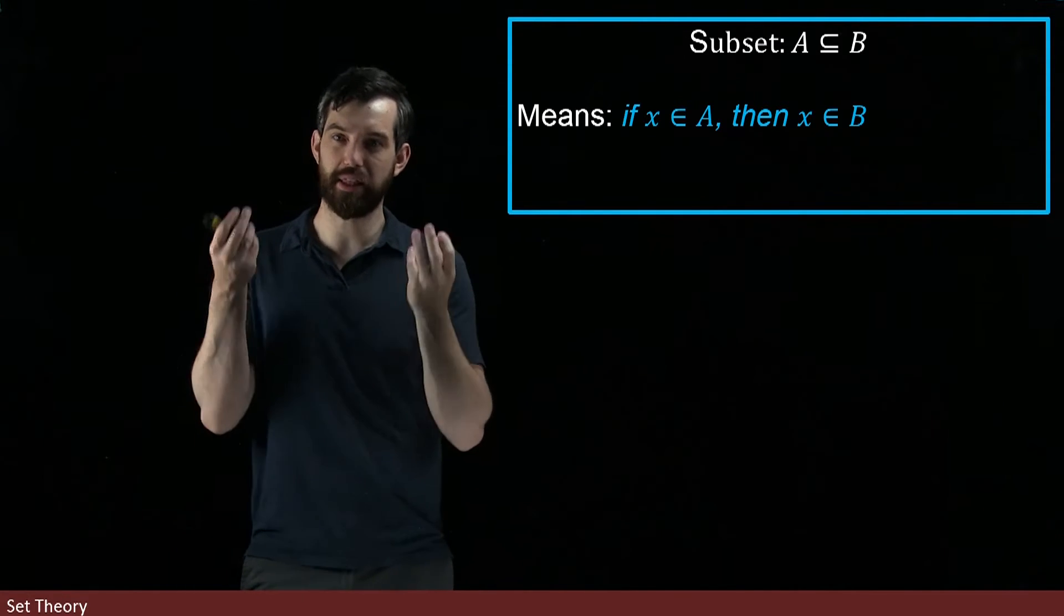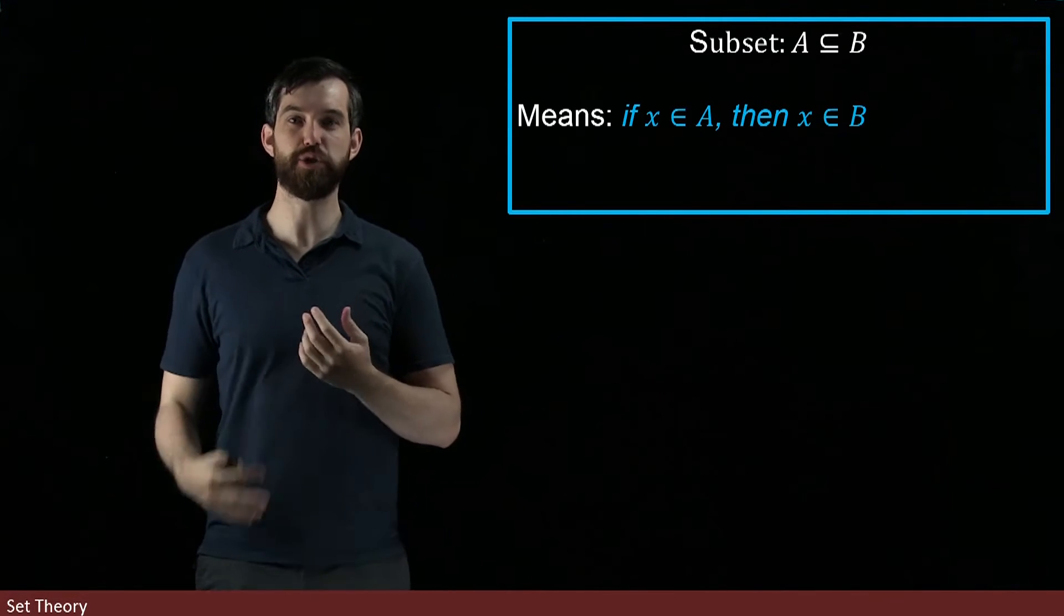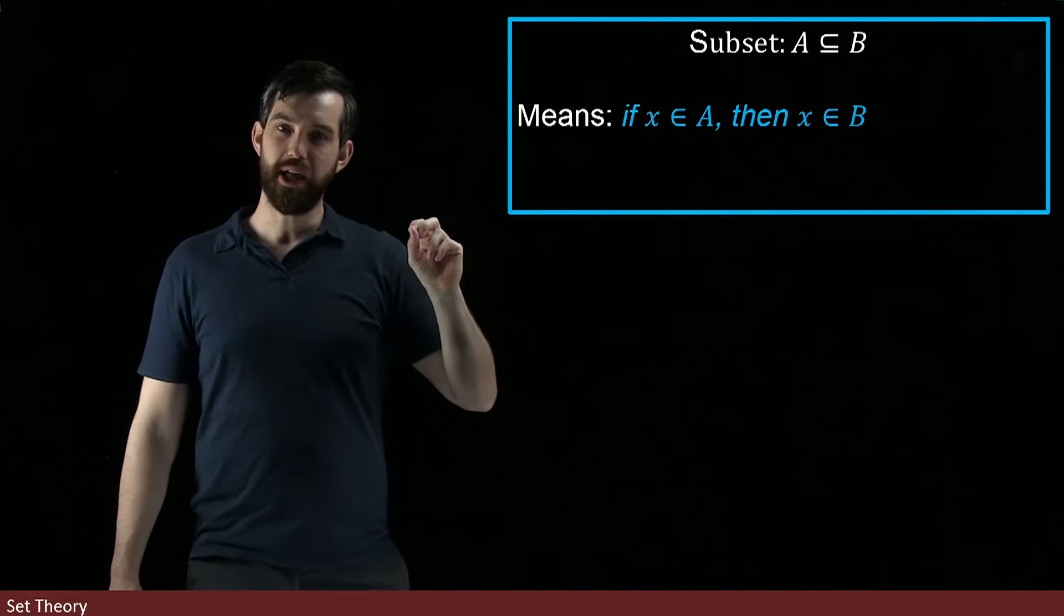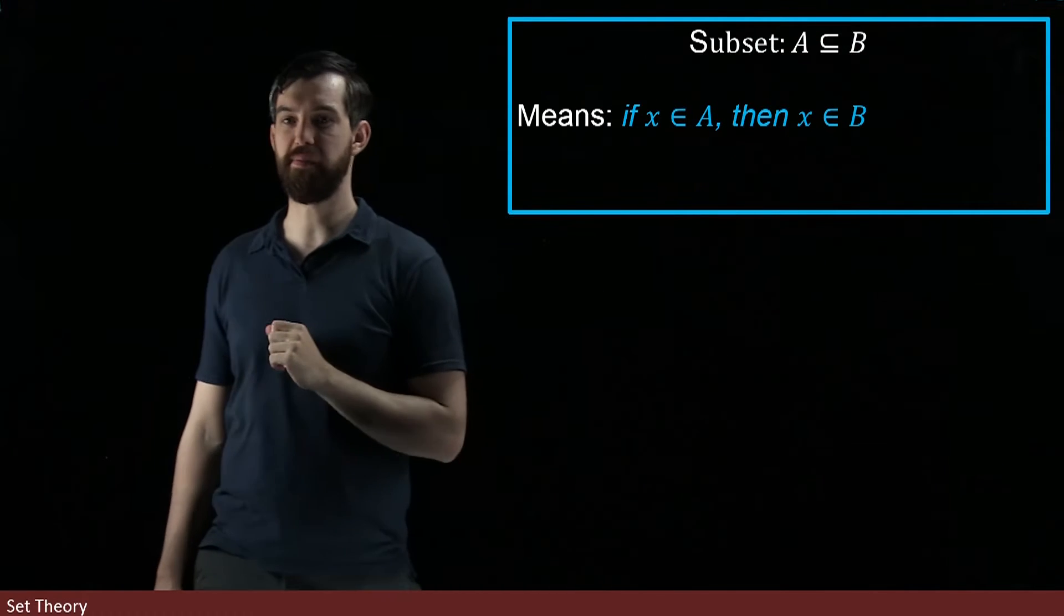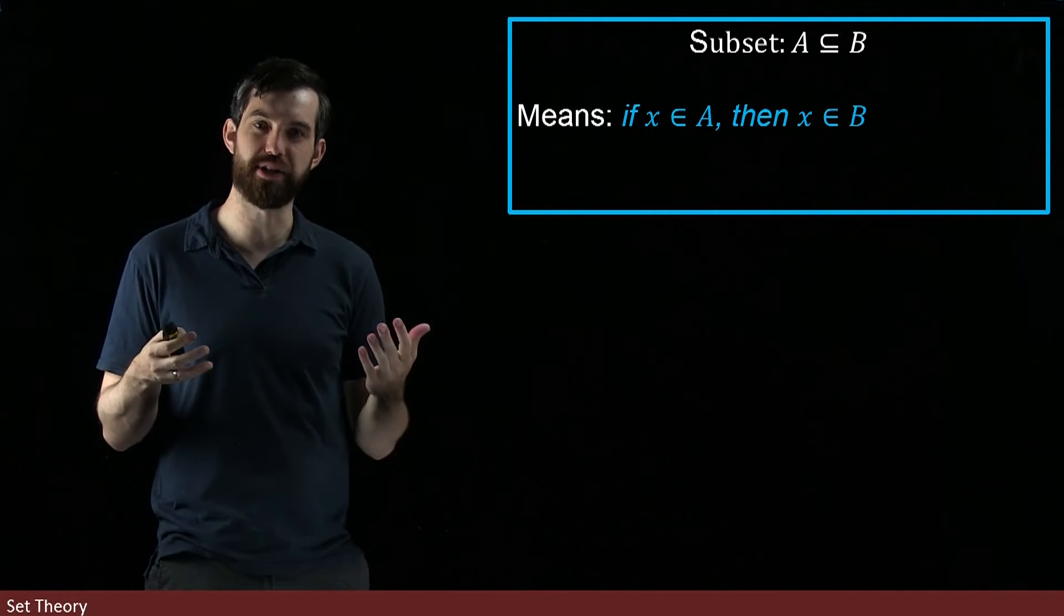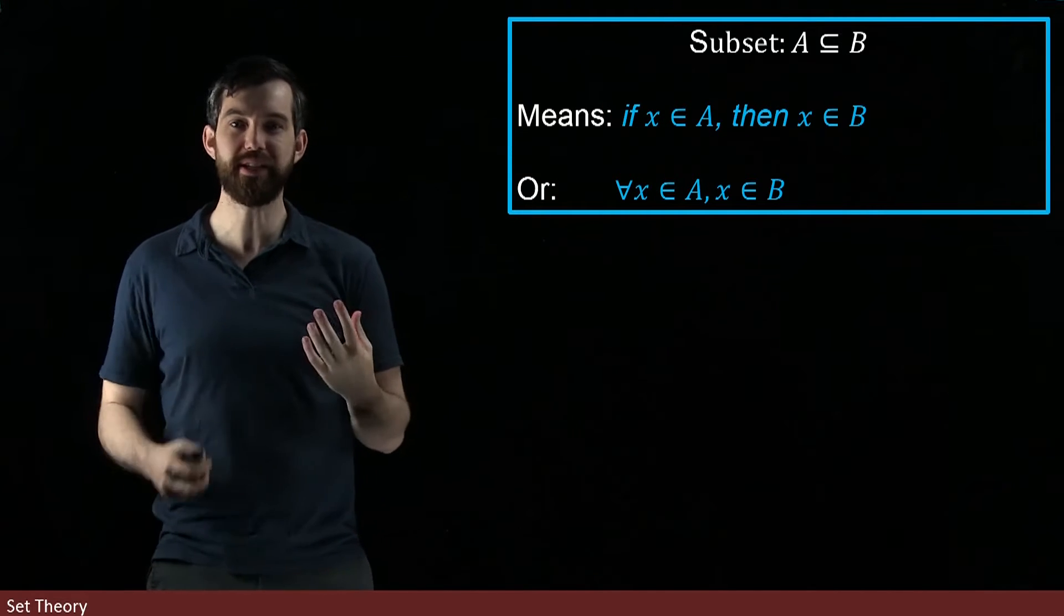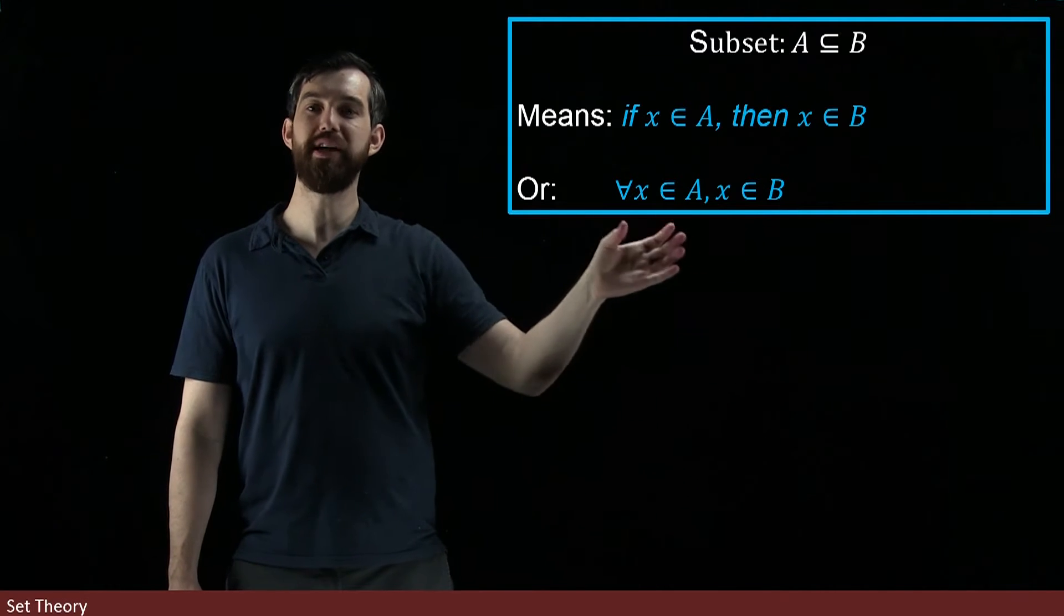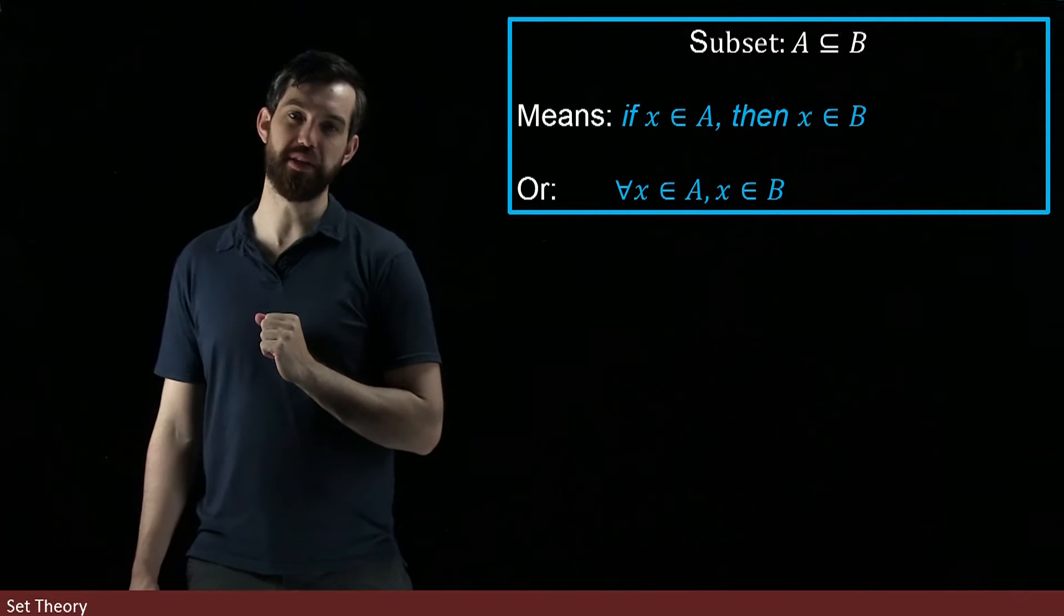This is thinking about subsets at the level of elements. If I have this containment where A is the smaller set, if you choose anything inside the A, then it must also be inside the B. We can also apply our universal quantifiers to this by saying that the statement 'if x ∈ A then x ∈ B' is equivalent to saying 'for every x ∈ A, x is also in B.' For every instance where it has this property of being in this set, then it must have this property of being in this other set.